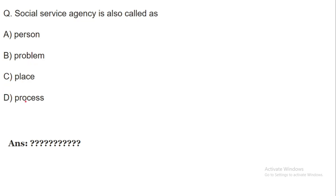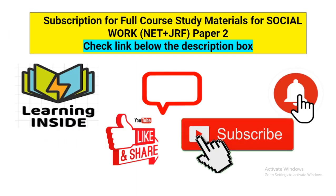Next question: A social service agency is called — a person, a problem, a place, or a process? Remember the four P's given by H.H. Perlman: 'A person with a problem comes to a place under a process.' This is a key component of social casework. So the social welfare agency is referred to as a 'place' in this framework. Please comment and let me know your opinion.